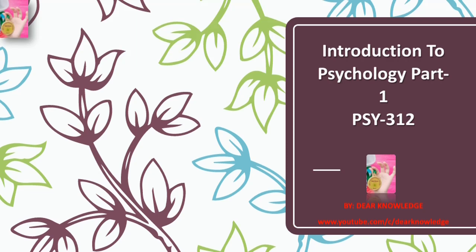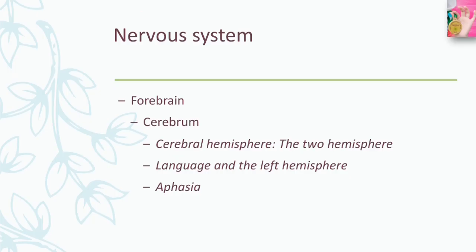Assalamu alaikum everyone. This is Introduction to Psychology Part 1, PSY 310. Today in this video we will be discussing the nervous system. In a previous video we discussed the nervous system, the central nervous system, and the cerebral cortex, which was a very large topic. So I decided to cover it before starting the initial video on forebrain. The cerebral cortex and the four different types of lobes were discussed in the previous video, and a link is given in the description.